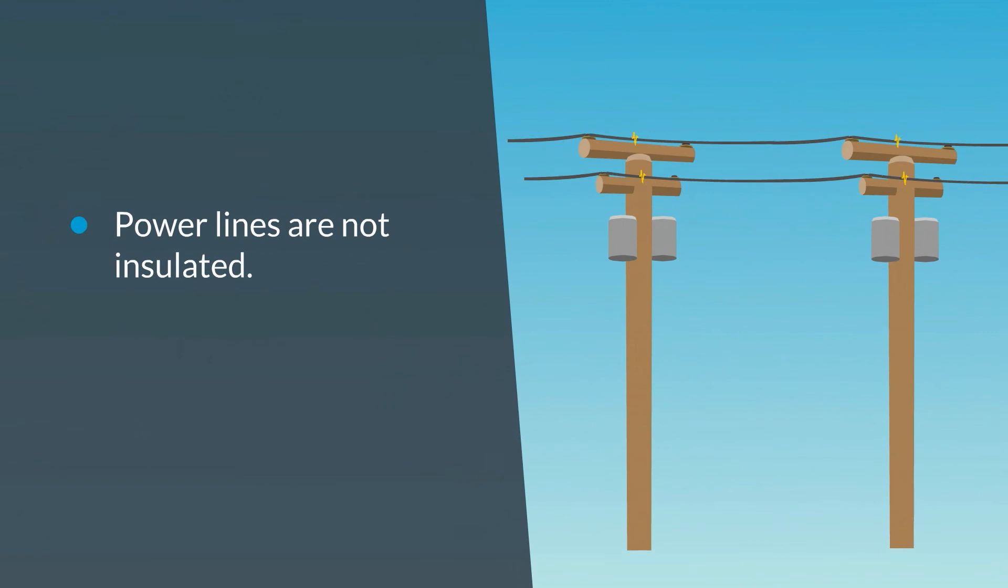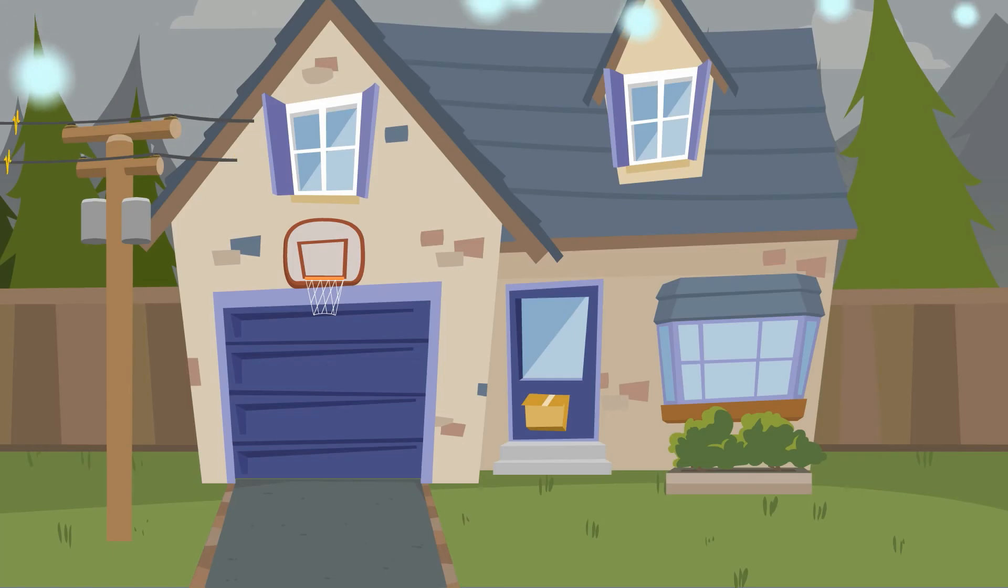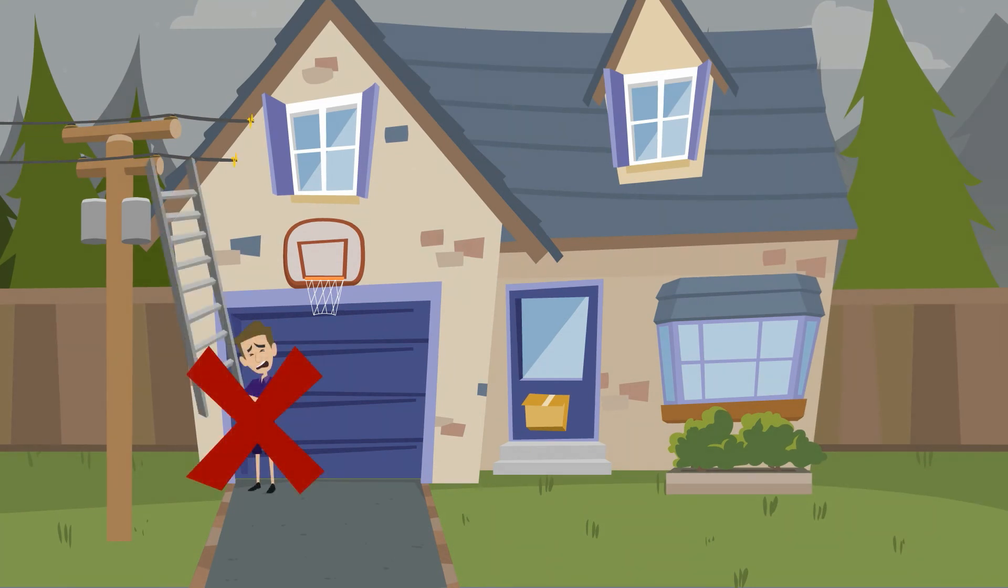Contrary to popular belief, power lines are not insulated. They are bare metal wires running high overhead. Sometimes, lines connected to our homes are coded to protect against weather, but not to protect against shock.